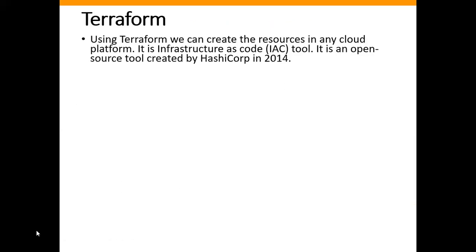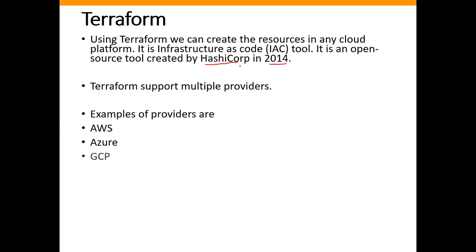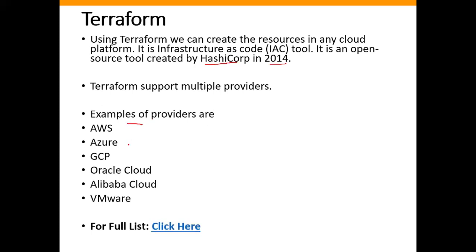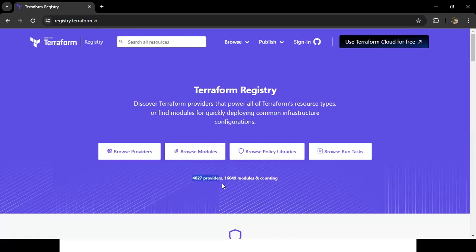Terraform was created by HashiCorp in 2014. With Terraform, you can create resources across more than 4000 service providers including AWS, Azure, GCP, Oracle Cloud, Alibaba Cloud, and VMware. The instructor showed the Terraform registry homepage listing 4027 providers, organized into three tiers: Official (34 providers), Partner (333 providers), and Community.